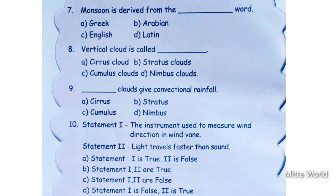Question 9: which clouds give convectional rainfall? Options: cirrus, stratus, cumulus, nimbus. Very good children — cumulus clouds give convectional rainfall. Answer is C, cumulus.